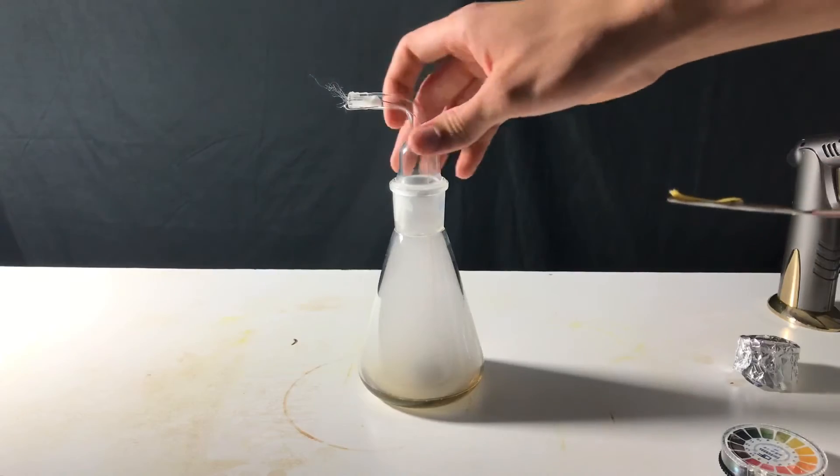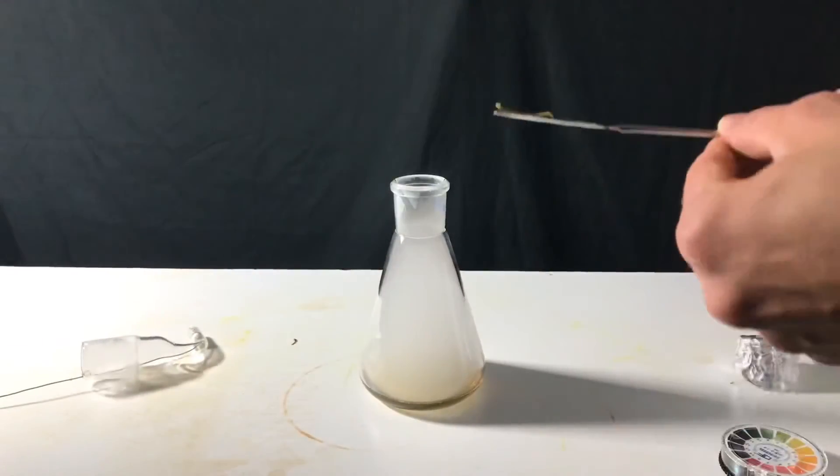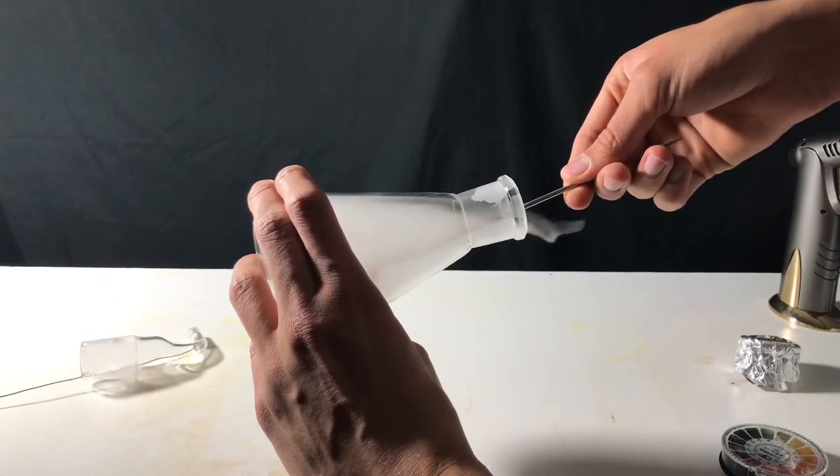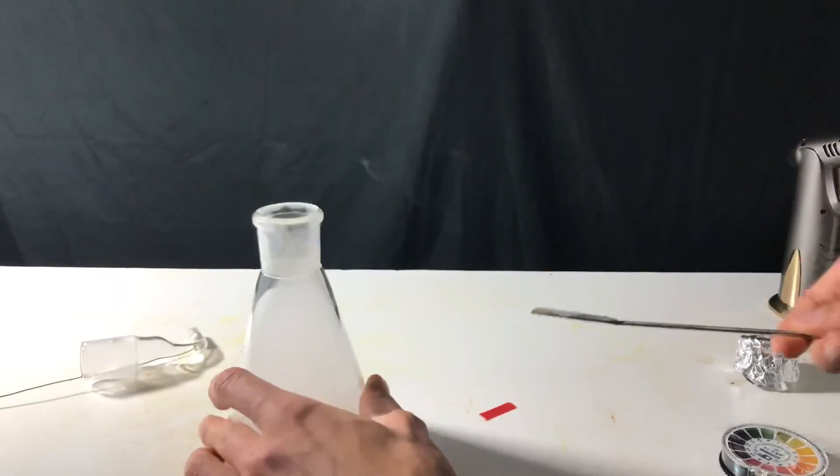The stopper was removed and a piece of pH strip was lowered down into the liquid. The pH paper turned out to be a bright red color which indicates the presence of acid.